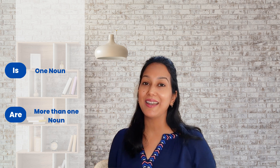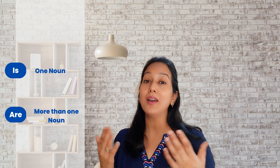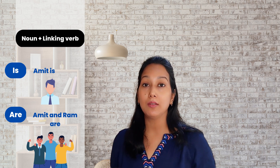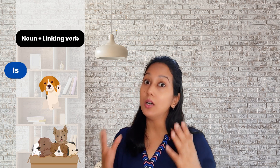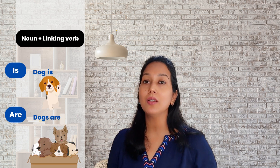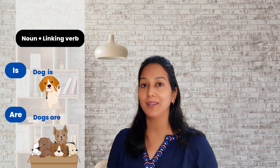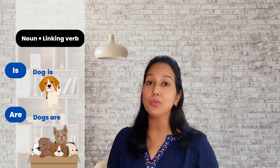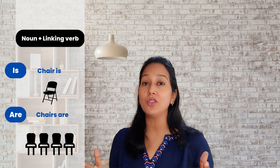We use 'is' when there is only one noun in a sentence, and we use 'are' when we have more than one noun. We will use 'is' with Amit and 'are' with Amit and Ram. We will use 'is' with a dog and 'are' with more than one dog. Likewise, we will use 'is' with a chair and 'are' with more than one chair.